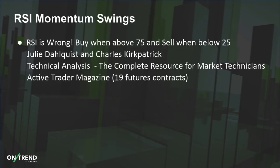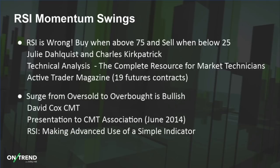There are also theories on RSI being a momentum indicator — specifically, buying when it's overbought. An article from Active Trader Magazine called 'RSI is Wrong' suggested buying when above 75 and selling when below 25, cited in the book by Julie Dahlquist and Charles Kirkpatrick, Technical Analysis: The Complete Resource for Market Technicians. There's also a presentation from David Cox, a Chartered Market Technician, showing how a surge from below 30 to above 70 indicates a sudden shift in momentum dynamics that is bullish.